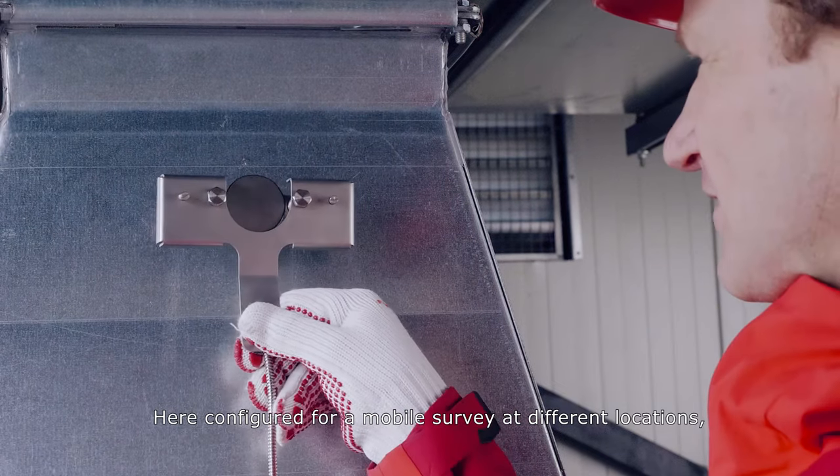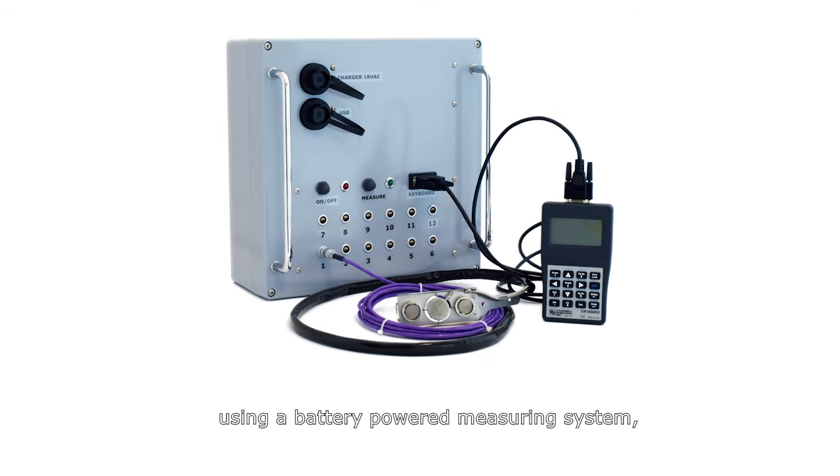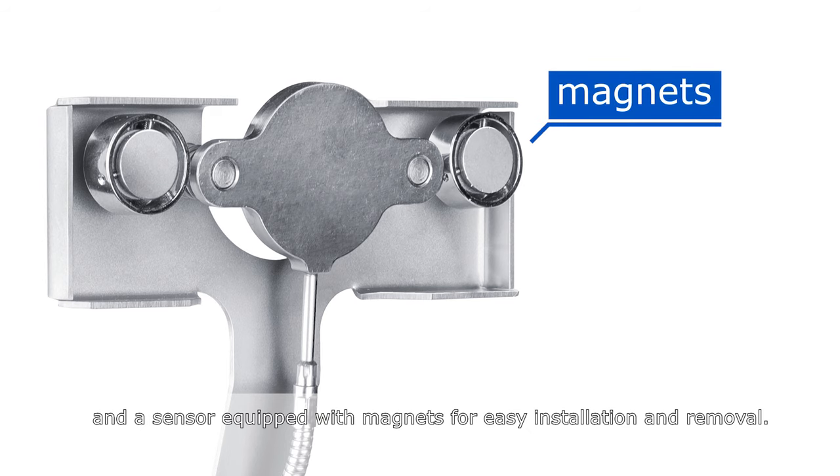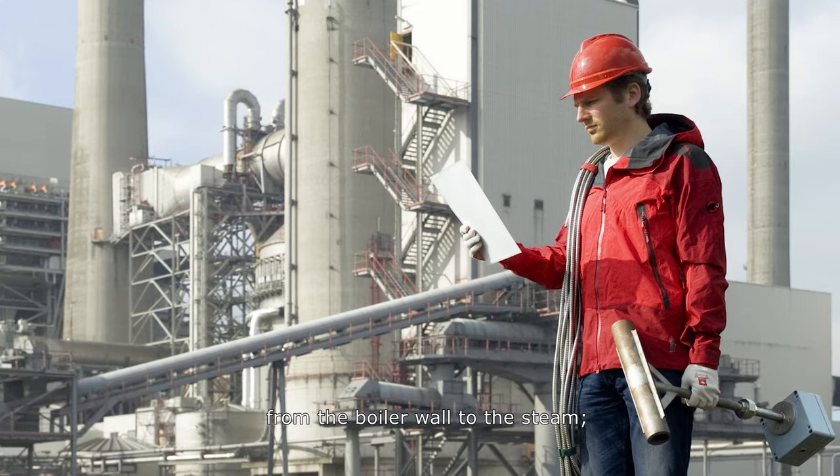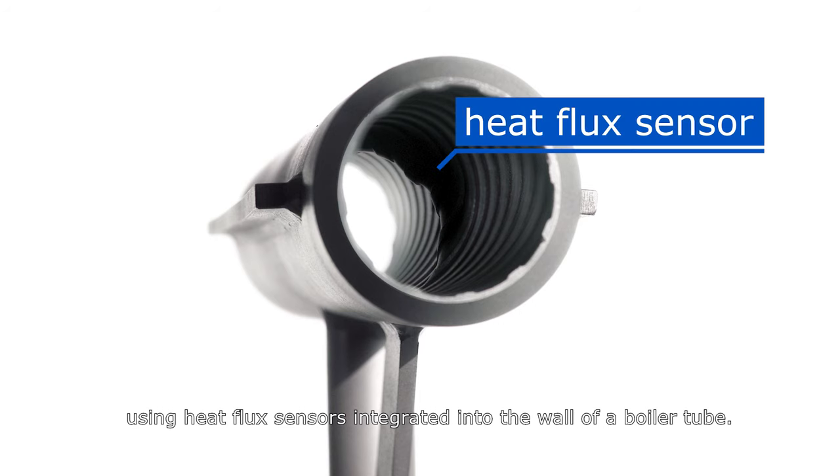Here configured for a mobile survey at different locations, using a battery powered measuring system and a sensor equipped with magnets for easy installation and removal. In electrical power plants you can measure the heat flux from the boiler wall to the steam, using heat flux sensors integrated into the wall of a boiler tube.